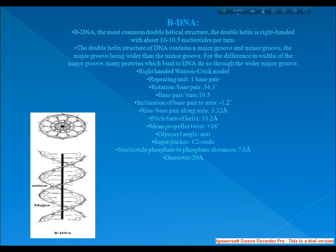Right-handed Watson-Crick model. Repeating unit: one base pair. Rotation per base: 34.3 degrees. Base pair per turn: 10.5. Inclination of base pair to axis: minus 1.2 degrees. Rise per base pair along axis: 3.32 angstroms. Pitch per turn of helix: 33.2 angstroms. Mean propeller twist: plus 16 degrees. Glycosyl angle: anti. Sugar pucker: C2-endo. Nucleotide phosphate to phosphate distances: 7.0 angstroms. Diameter: 20 angstroms.